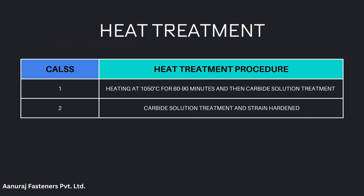Heat treatment procedures: Class 1 involves heating at 1050 degrees Celsius for 60 to 90 minutes followed by carbide solution treatment. Class 2 involves carbide solution treatment and strain hardening.